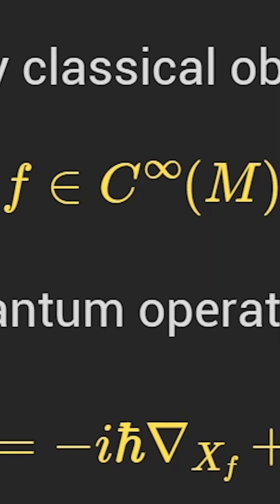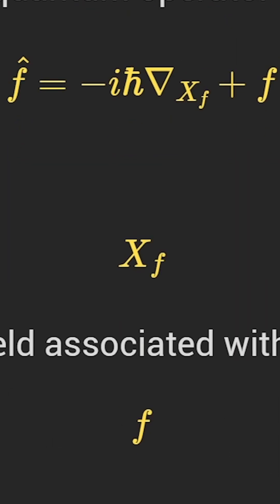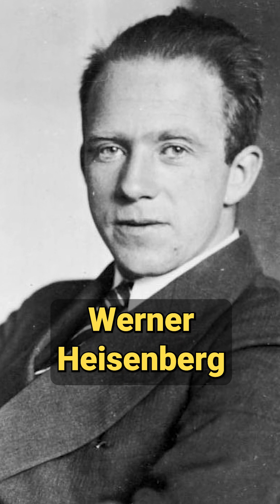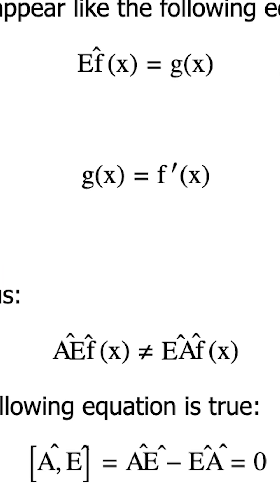To answer, observe that for any classical observable, pre-quantization assigns a quantum operator. But how does this relate to Heisenberg's uncertainty principle? Consider the commutator of two such operators, f-hat and g-hat.